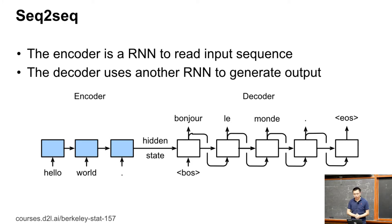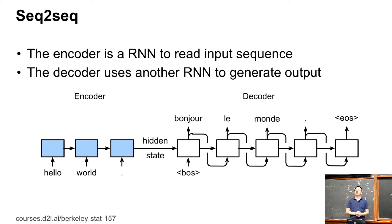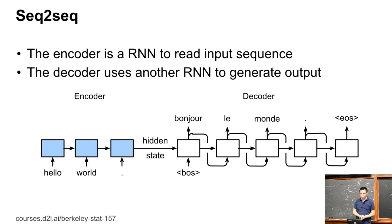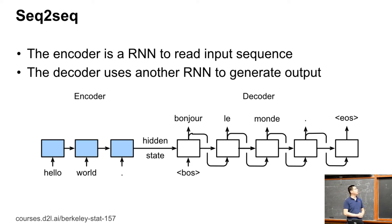We use another RNN — almost identical — for the decoder. We use the hidden state output from the encoder as the initial hidden state for the decoder RNN. Before, we just initialized by zero; now we initialize with something that contains the information from the source sentence. During prediction, the first input we feed in is a special token called the beginning of sentence, or BOS.